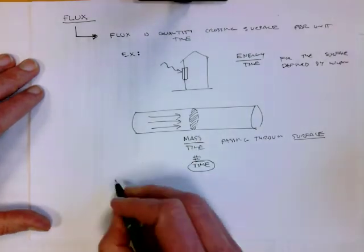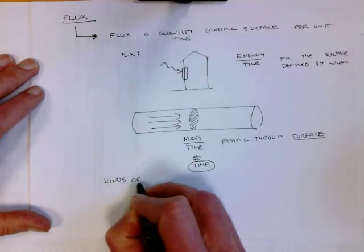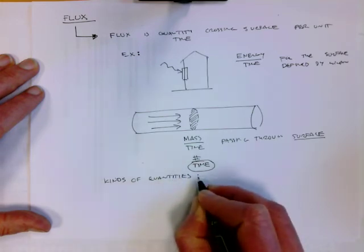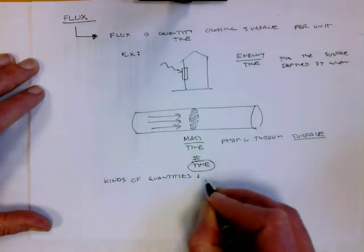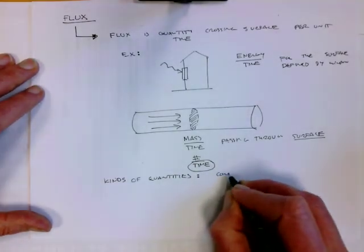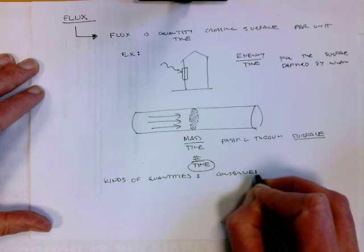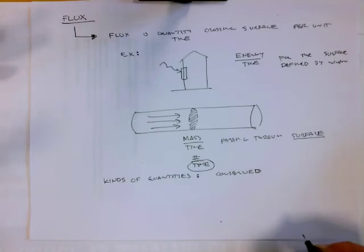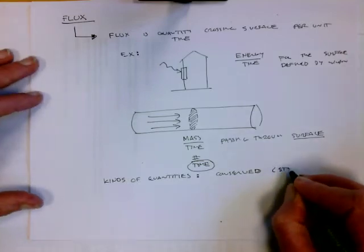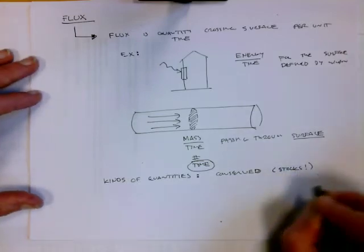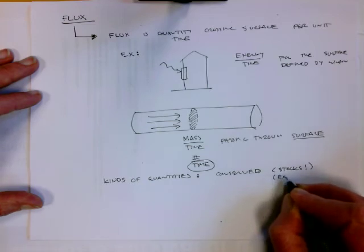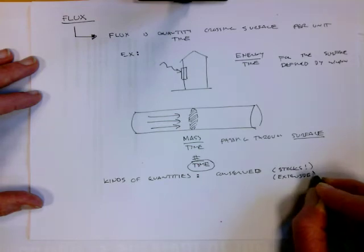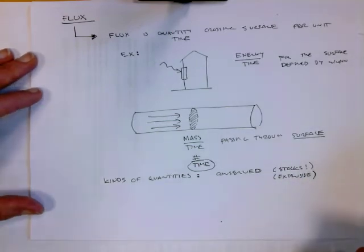Now, you might ask what kinds of quantities does it make sense to talk about the flux of? In general, when we're deriving partial differential equations, we're talking about conserved quantities when thinking about flux. We're talking about the kinds of quantities that it would make sense to have a stock of, physical extensive quantities that are not just a material property, but are actually associated with how much stuff there is.